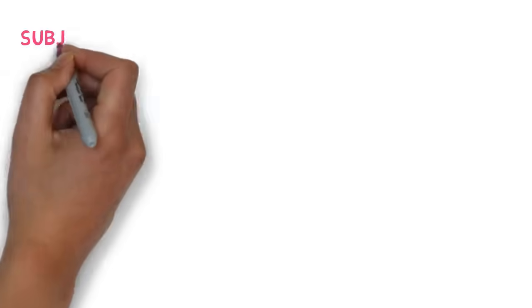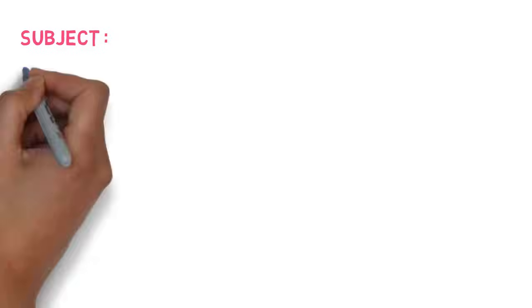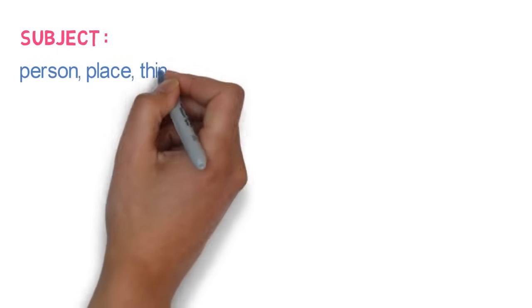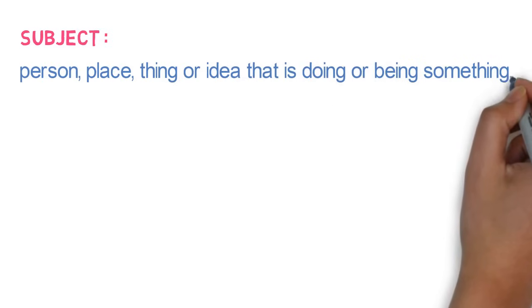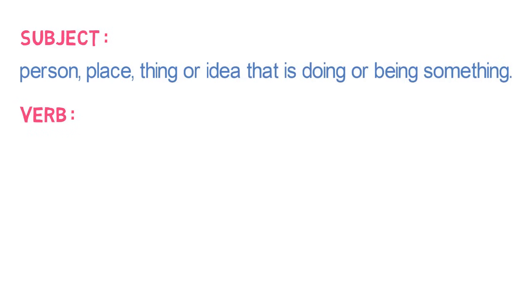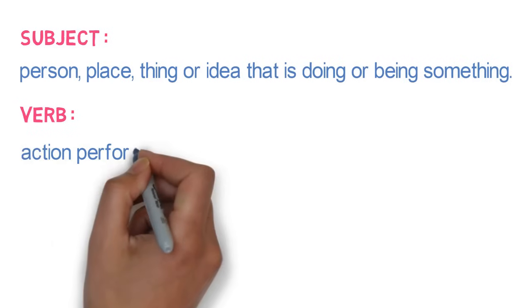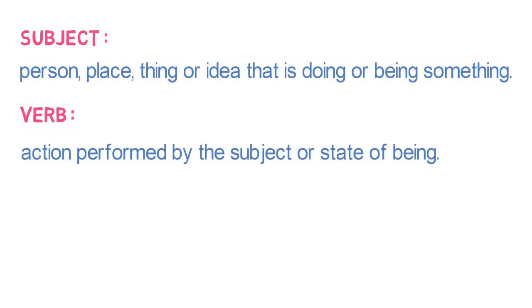So, what is Subject in the sentence? The subject of a sentence is the person, place, thing or idea that is doing or being something. And what is the verb in the sentence? It is the action performed by the subject or state of being.